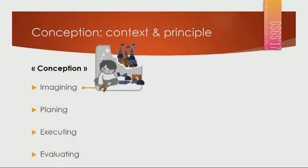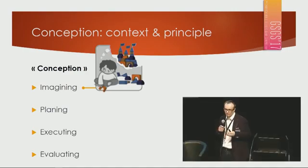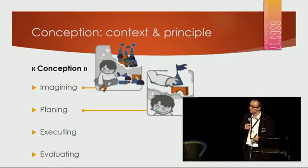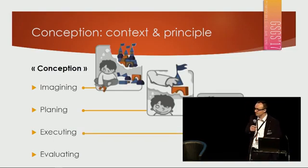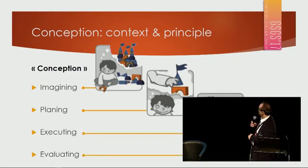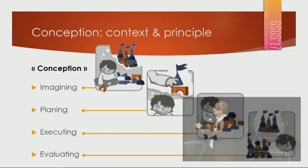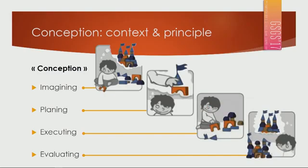So the main idea: we thought about the concept — the conception. How do you do something, anything? Think of a kid: they imagine making a castle, then they plan to do it, then they execute something, and maybe they're happy or not with the result, so they evaluate. These four processes — conceive, plan, execute, evaluate — are the basis of how you make anything. That's the first concept.